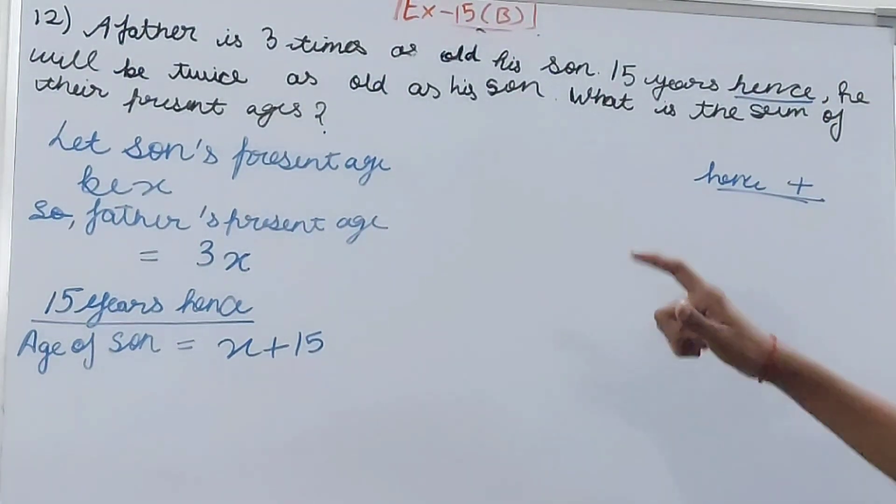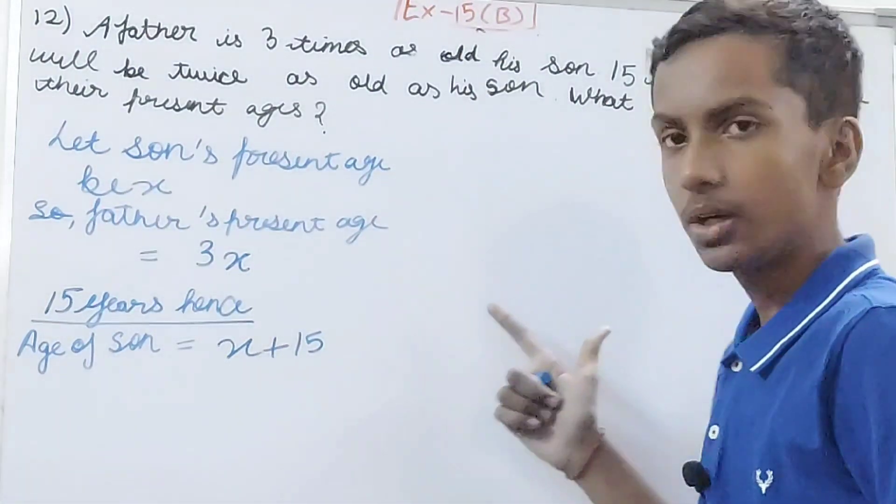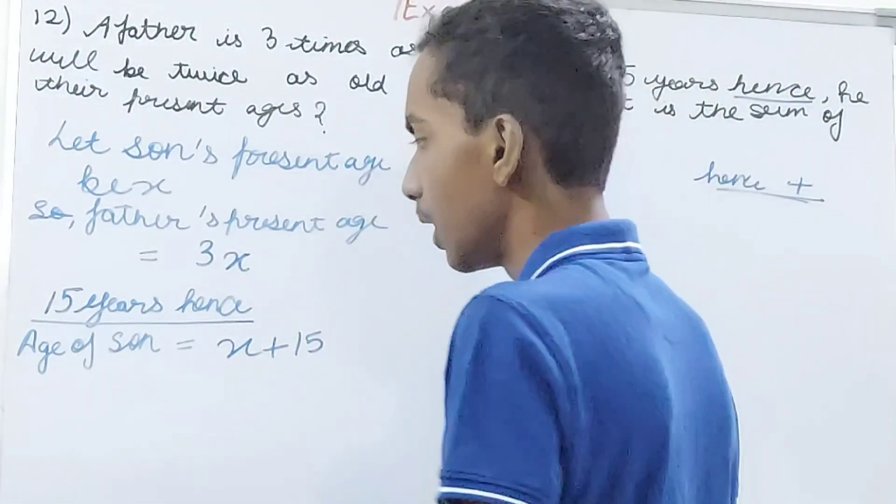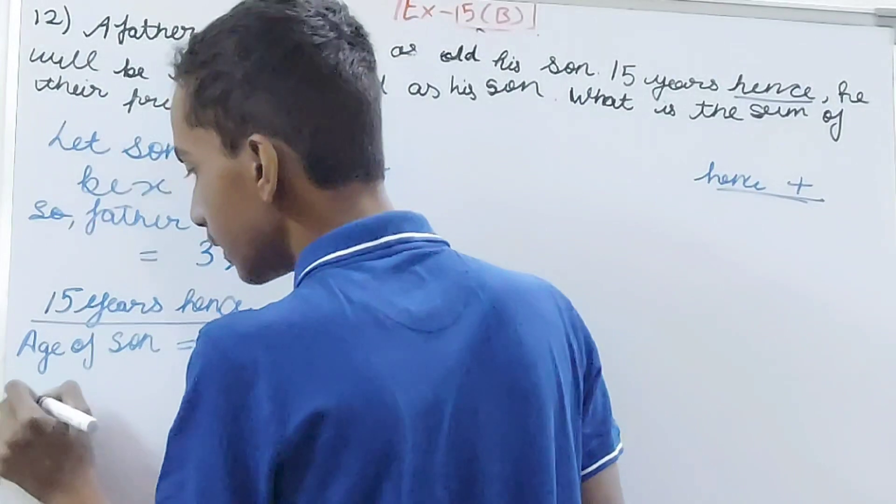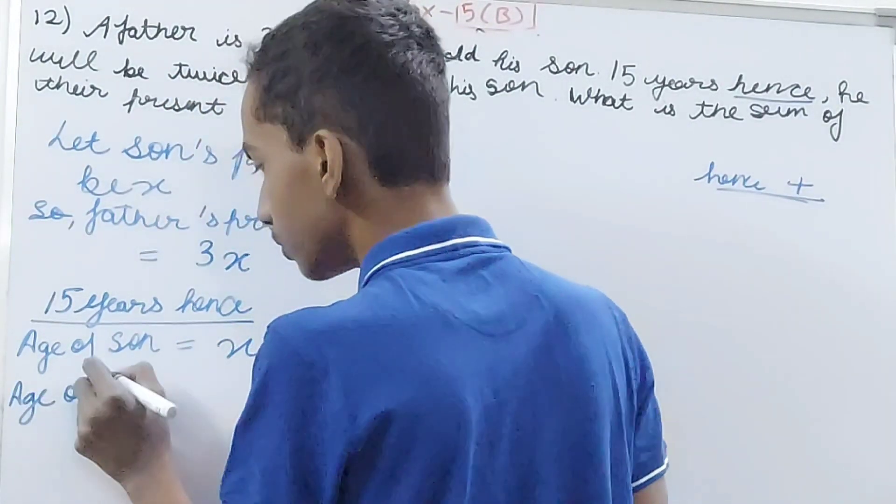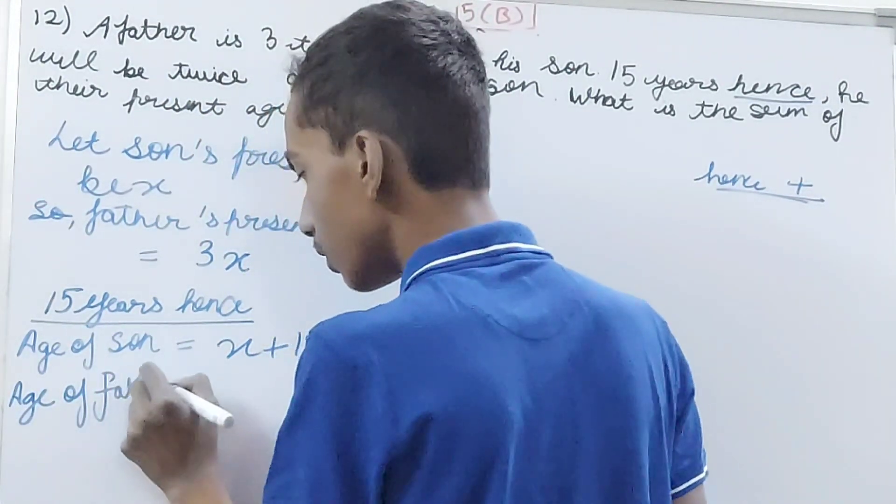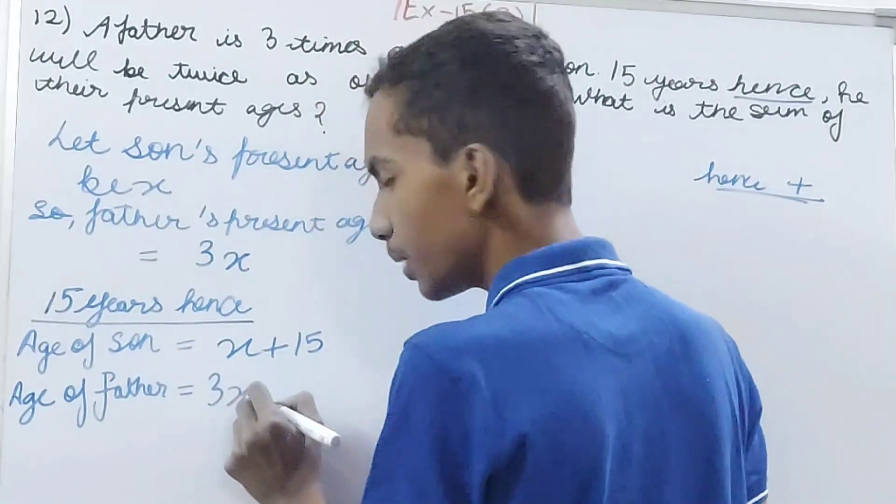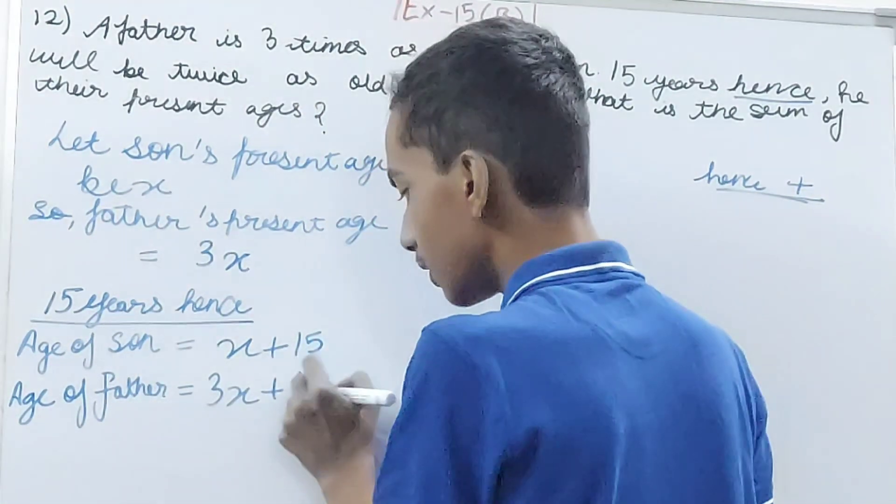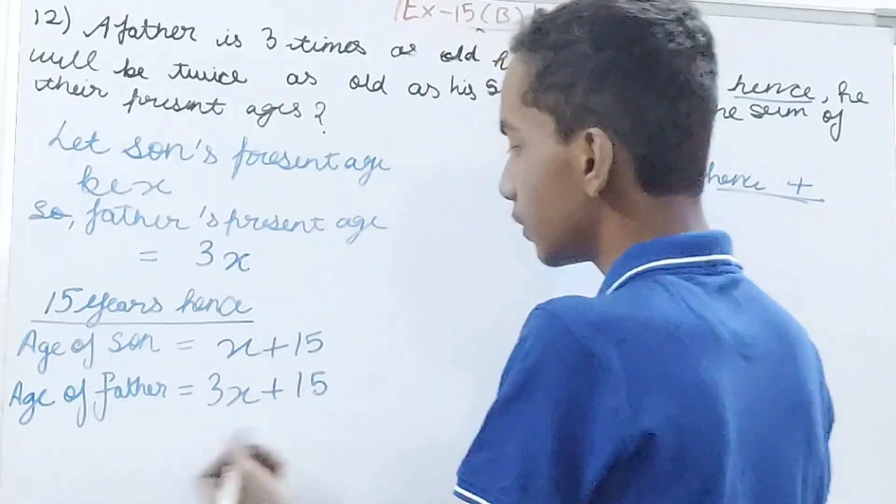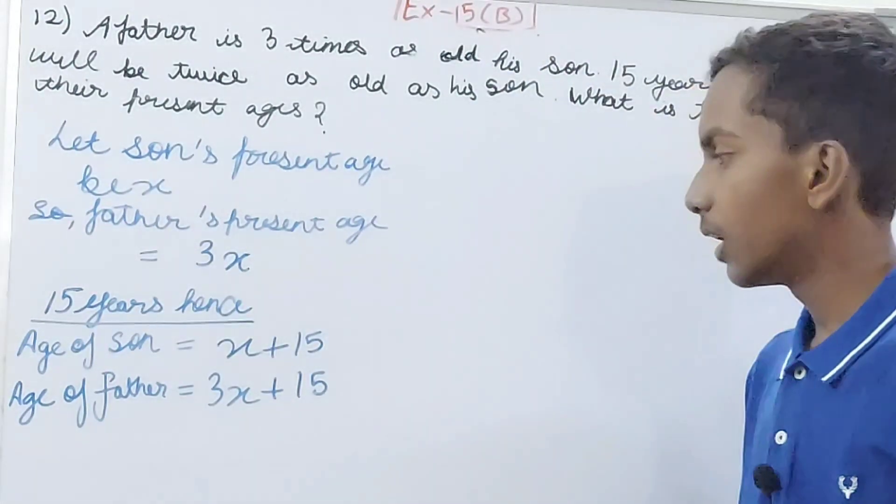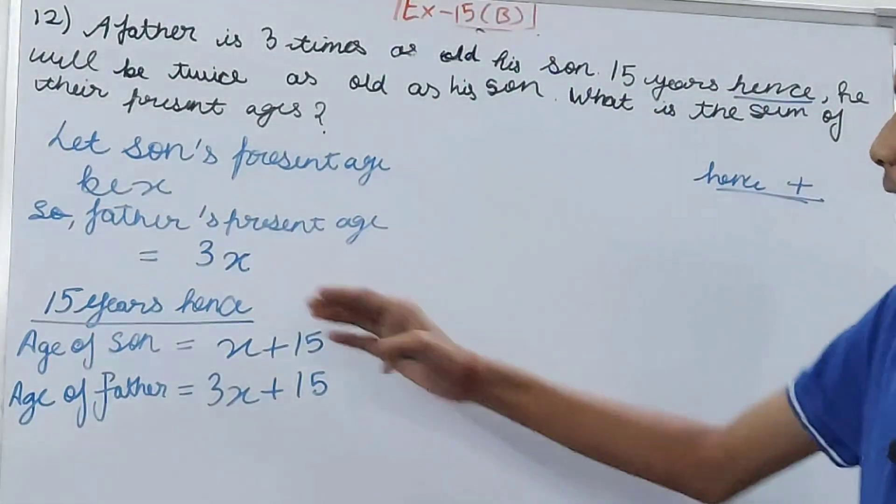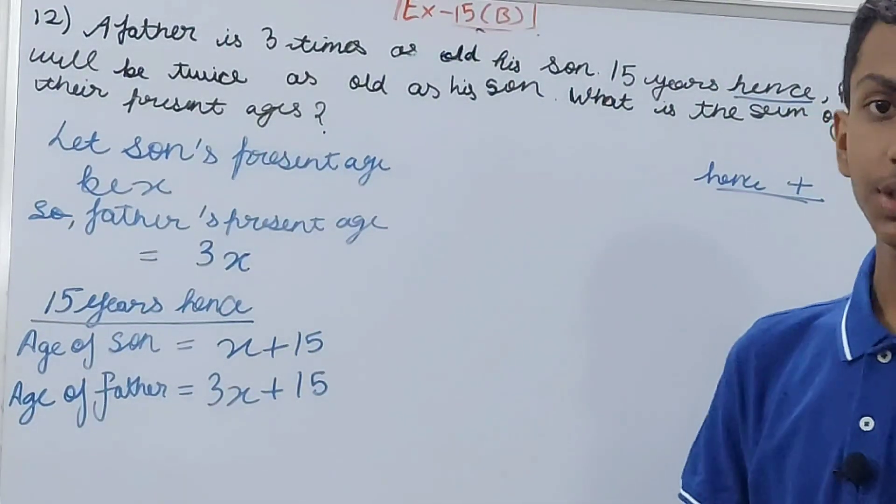It is saying he will be twice as old as his son, but first calculate the age of father also. 3x was his present age, so his age after 15 years will be 3x + 15.